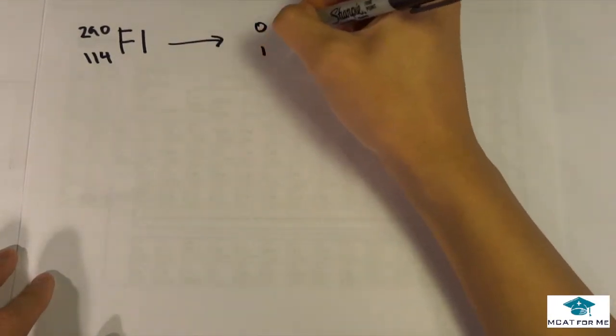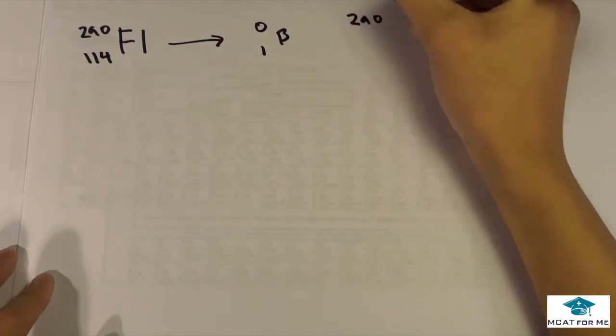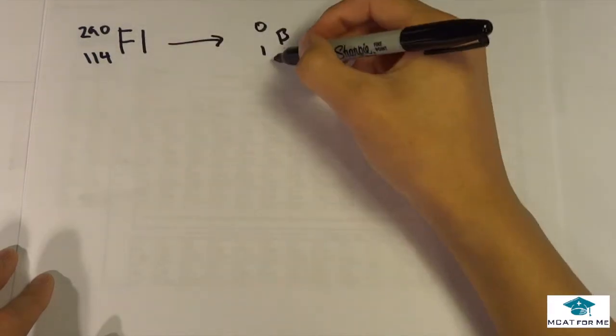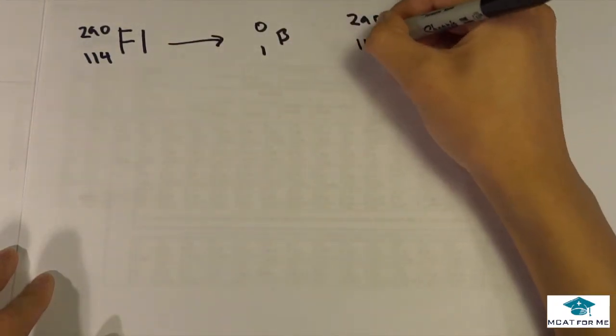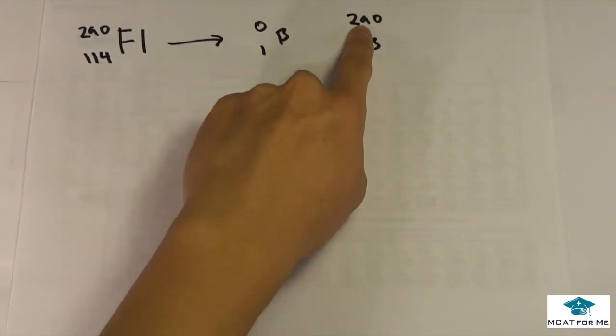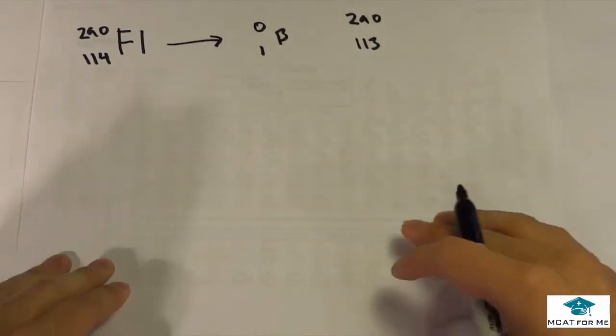And so we know that it releases this beta particle. So we know it has to be 290 on top, and what would be on the bottom? Well we know that it has to add up to 114, and we know it's subtract 1. So it has to be 113. So we know that our final molecule will have a mass number of 290, proton number of 113.